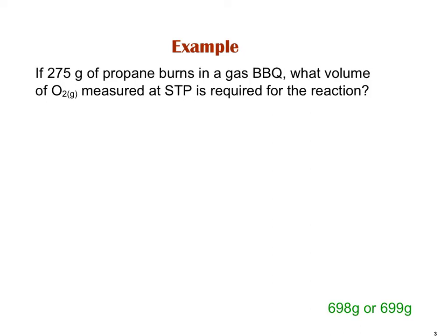Let's jump into an example. Now that we understand the basics of stoichiometry, stoich means you take what you're given, convert it to moles. Using a balanced chemical equation, we're going to use our mole ratio to switch between two compounds and report our required value. If 275 grams of propane burns in a gas barbecue, what volume of O2 measured at STP is required for the reaction?